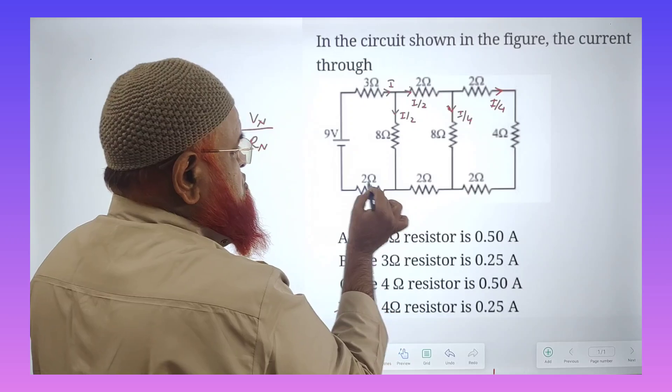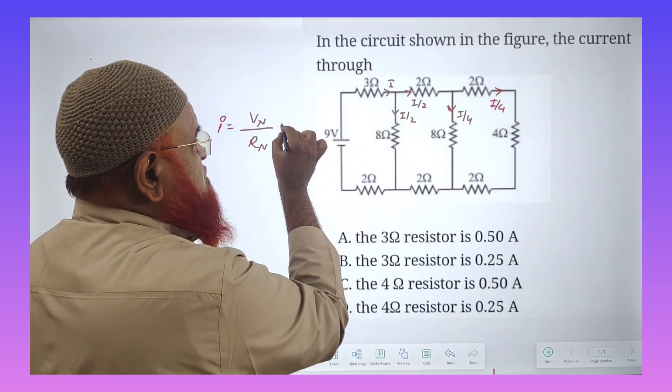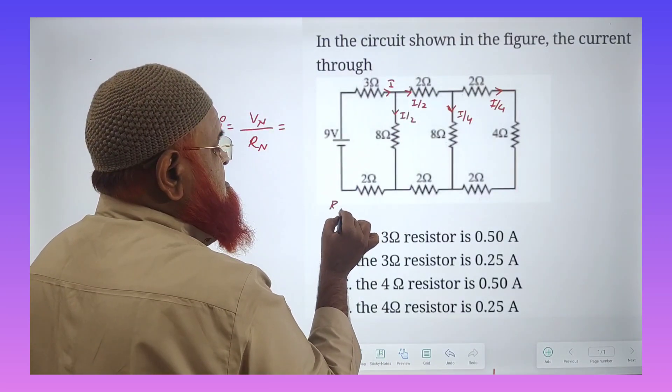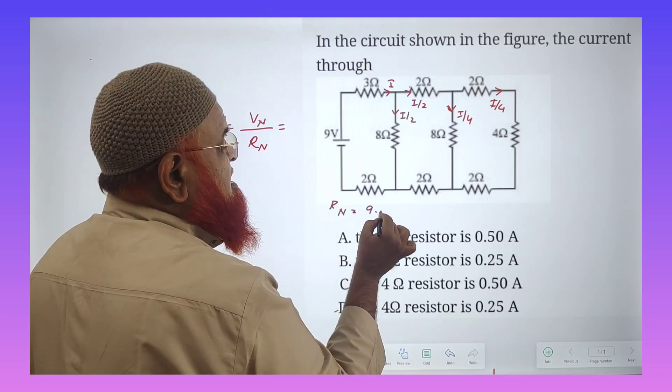3 plus 4 plus 2. 3 plus 4 plus 2 is nothing but total resistance is going to be 9 ohms.